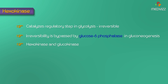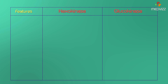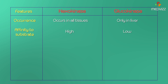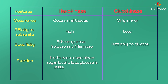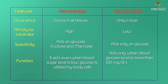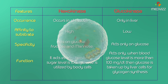Hexokinase and glucokinase are both isoenzymes and have tissue specificity. Hexokinase occurs in all tissues but glucokinase only in the liver. Hexokinase has high affinity and low KM for its substrate, whereas glucokinase has low affinity and high KM. Hexokinase acts on glucose, fructose, mannose, and all hexoses, but glucokinase acts only on glucose in the liver. Hexokinase acts even when blood glucose levels are low, ensuring glucose is utilized by body cells. Glucokinase acts only when blood glucose levels are above 100 mg/dL, then glucose is taken up by liver cells for glycogen synthesis.